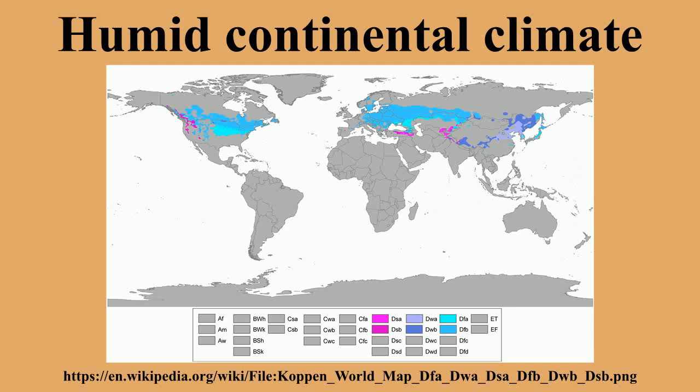Northern Japan has a similar climate. In the Southern Hemisphere, it exists in well-defined areas only in the Southern Alps of New Zealand, the Snowy Mountains of Australia, Kiandra, New South Wales, and perhaps as isolated microclimates of the southern Andes of Chile and Argentina.